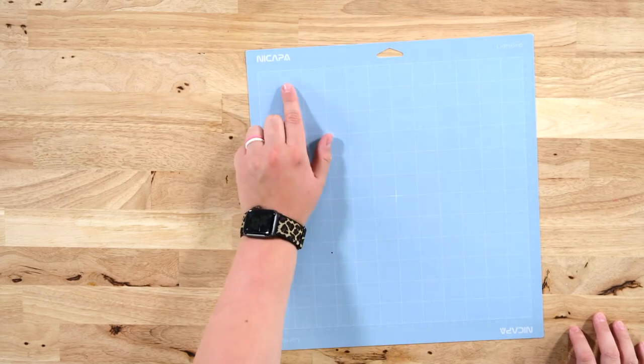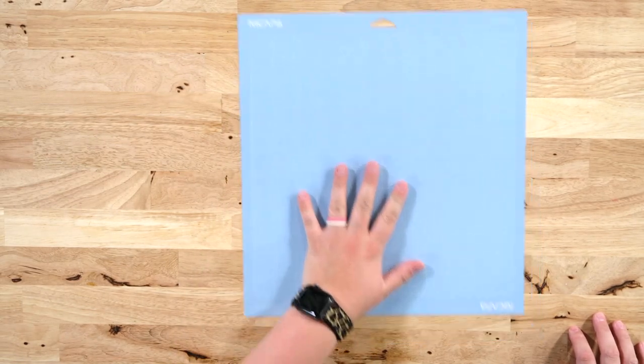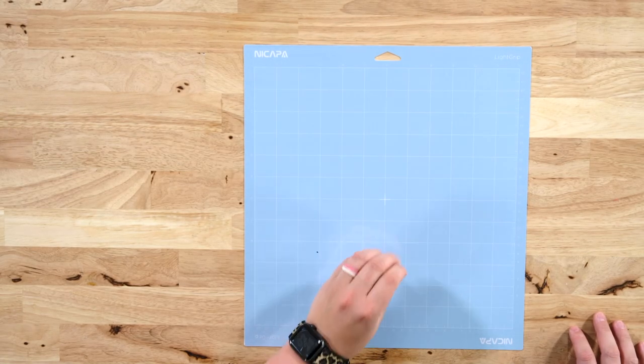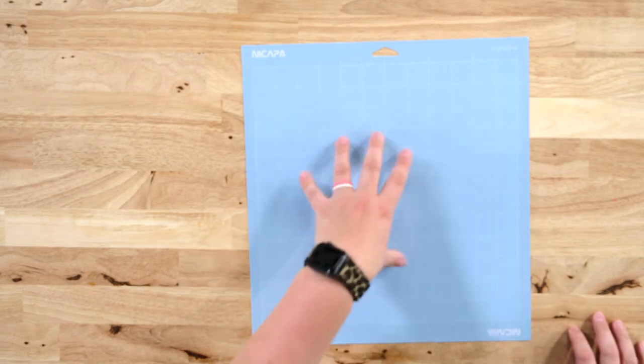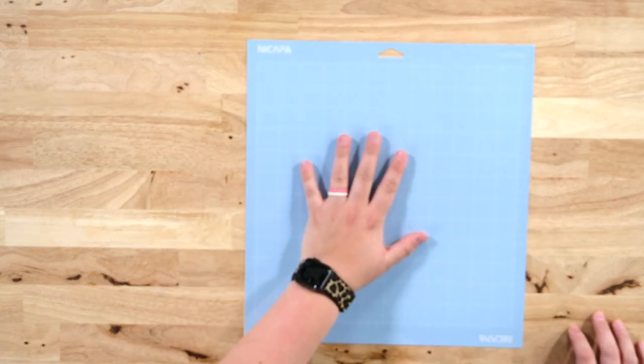This is a Nikopah mat, Nikopah brand. They have the same strengths of mats in the same colors. This one is light grip. They have a green stander grip. They have a purple strong grip and a pink fabric grip.